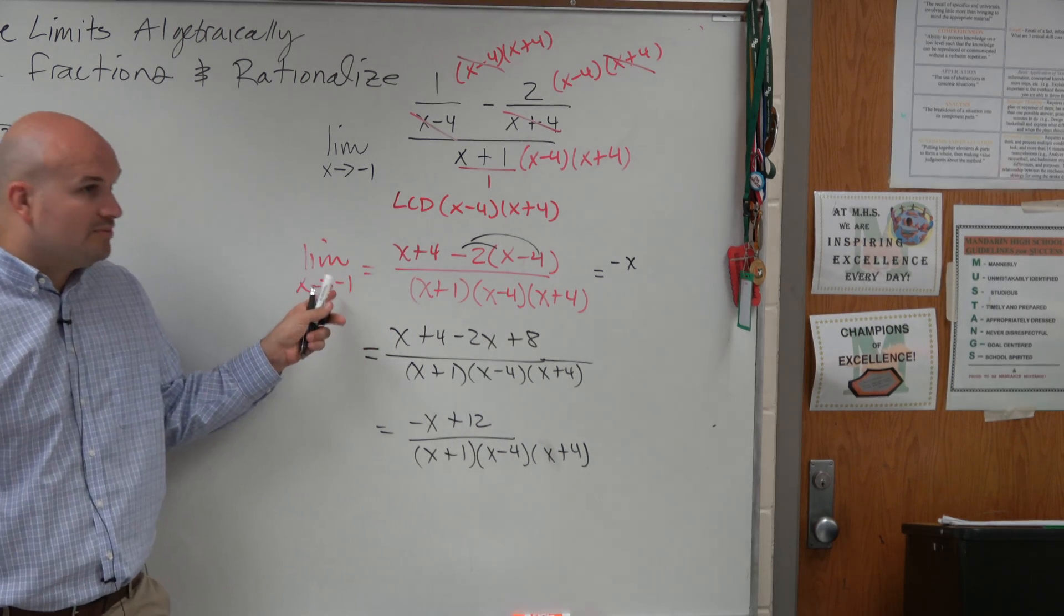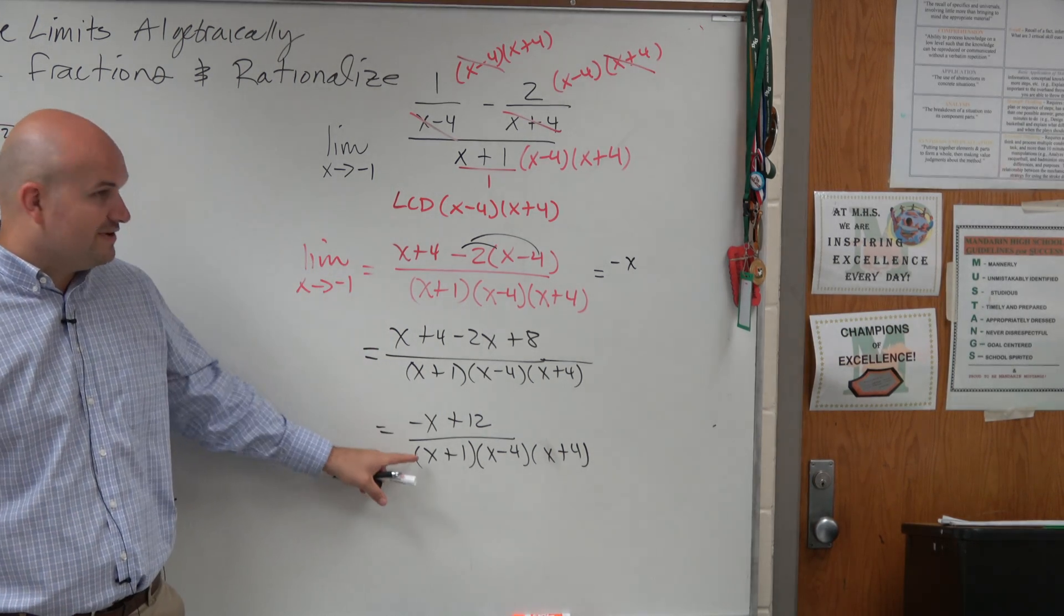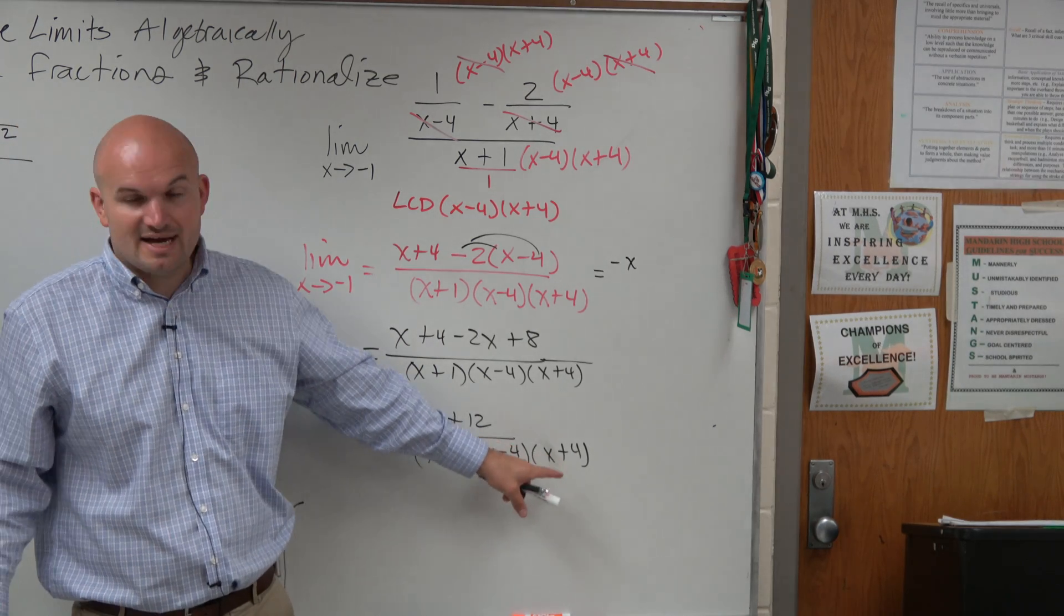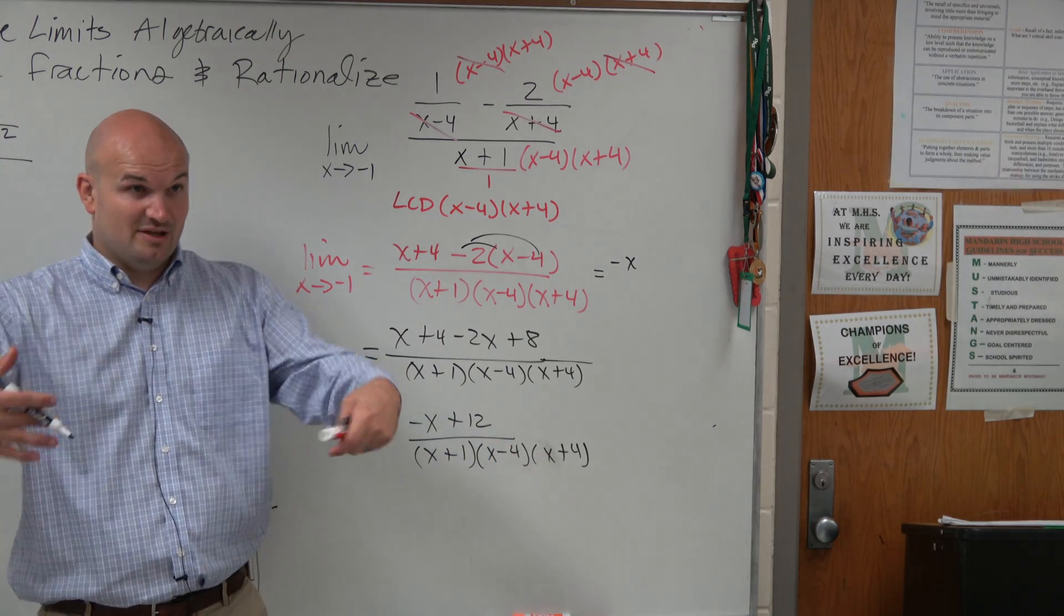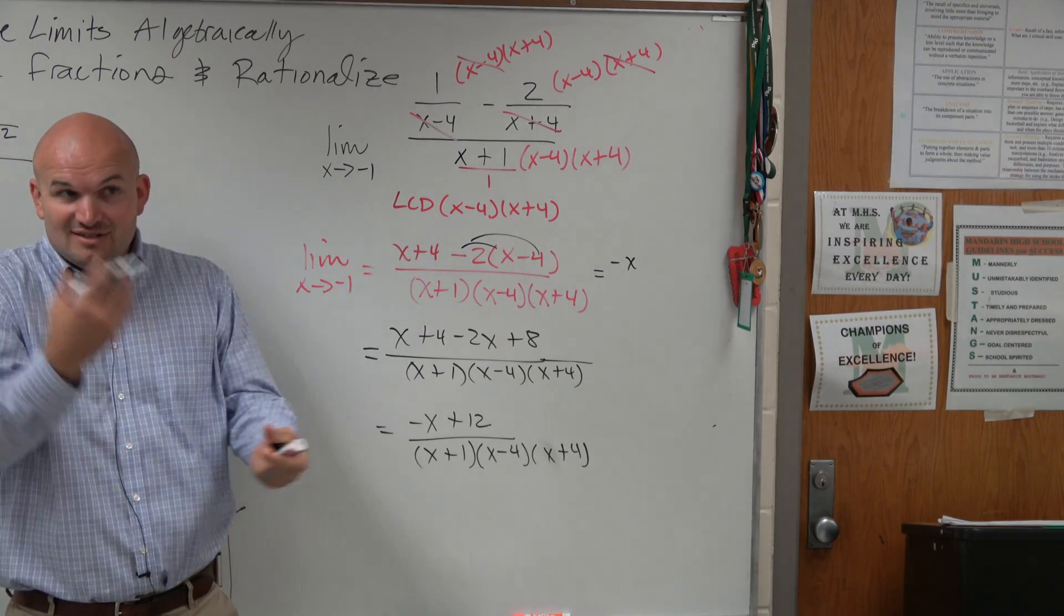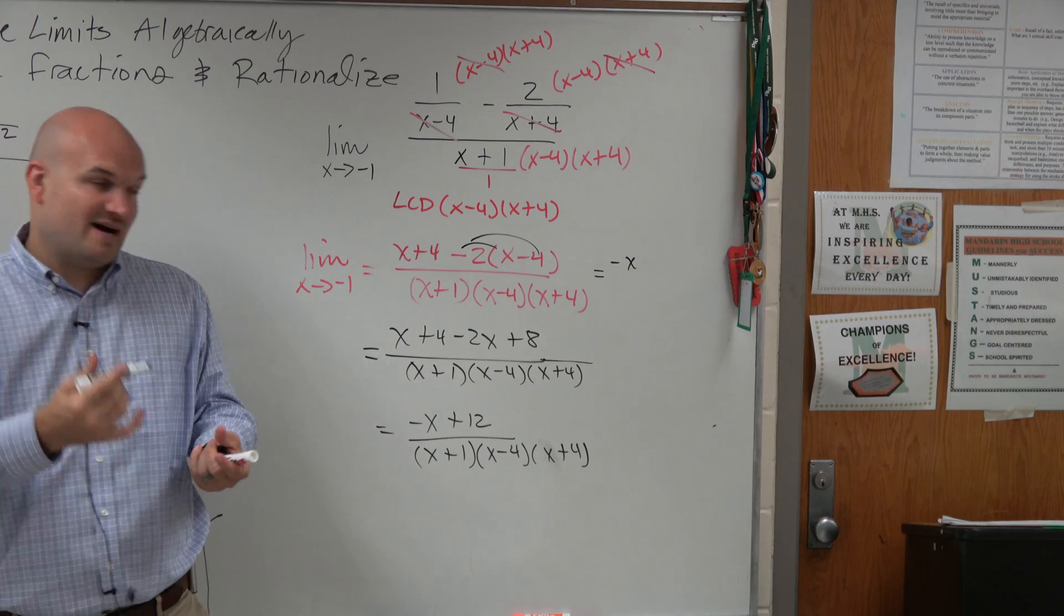So guys, what happens when we still plug in negative 1? When we evaluate for negative 1, what is that going to be? 0 times that is 0 times that is 0. So even though we went through all the mathematics of finding the LCD, we still didn't do anything mathematically that could have simplified us.